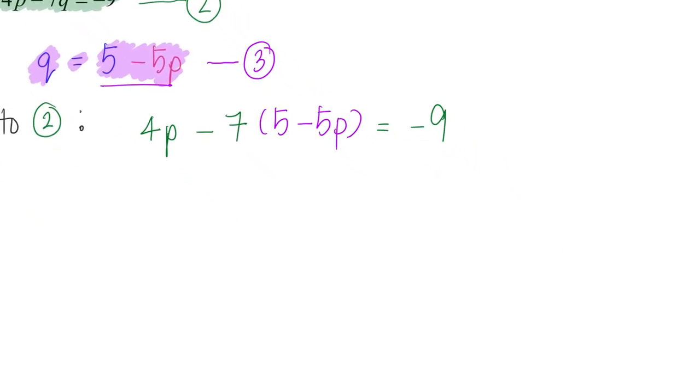Once I have this, I just need to solve this equation: negative 7 multiplied by positive 5 equals negative 35, and negative 7 multiplied by negative 5P equals positive 35P.